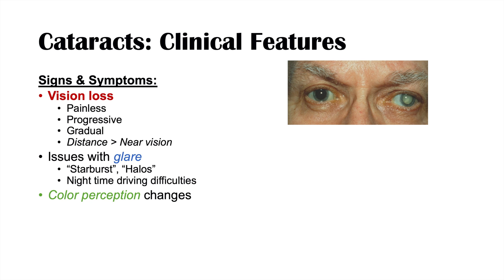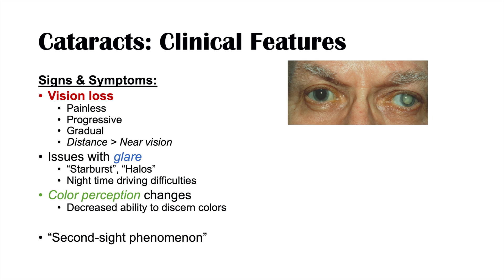Color perception changes can also occur, particularly with nuclear sclerosis cataracts. Because the lens is yellow to brown, it can make the patient's perceived environment look yellowish — something white may appear slightly yellow to them. Additionally, we can see the second sight phenomenon, which is an increasing myopia. Individuals who previously used reading glasses may find, as their cataract worsens, that their refractive error shifts such that they no longer need those reading glasses.